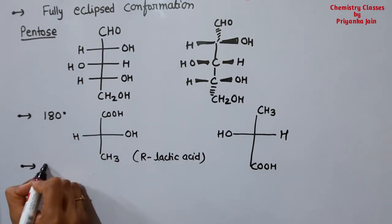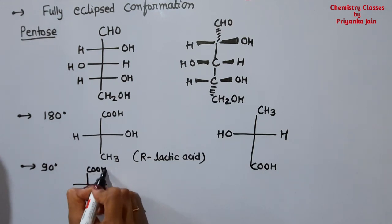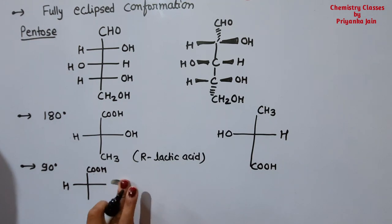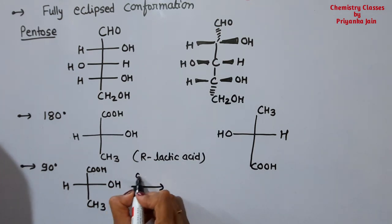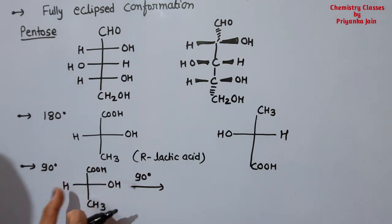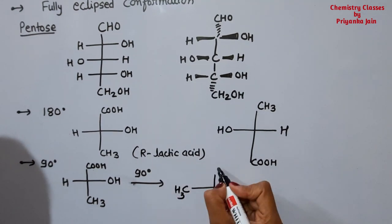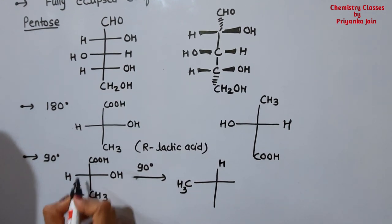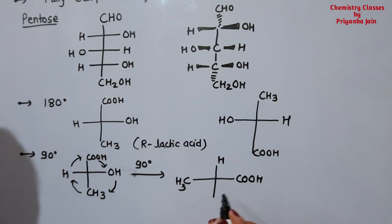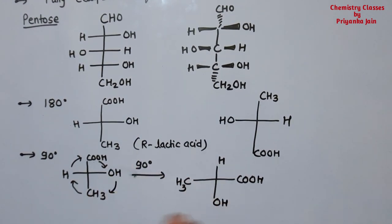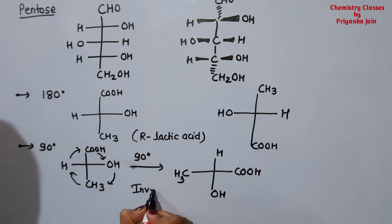However, if we rotate the Fischer projection by 90 degrees, the configuration will invert. For example, R lactic acid rotated by 90 degrees gives S lactic acid. So a 180-degree rotation gives an identical molecule, while a 90-degree rotation inverts the configuration.